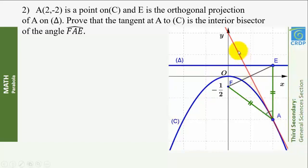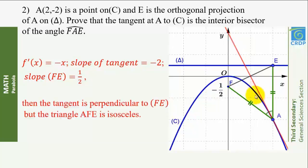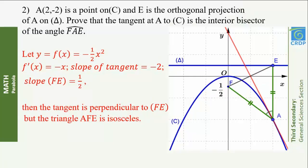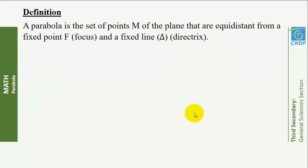f'(x) = −x, so the slope of the tangent equals −2 because f'(2) = −2. The slope of the line AE equals ½. Therefore the tangent is perpendicular to the line AE. But triangle AFE is isosceles because A is on C, so A is equidistant from F and delta. Therefore the tangent is the bisector of angle FAE.